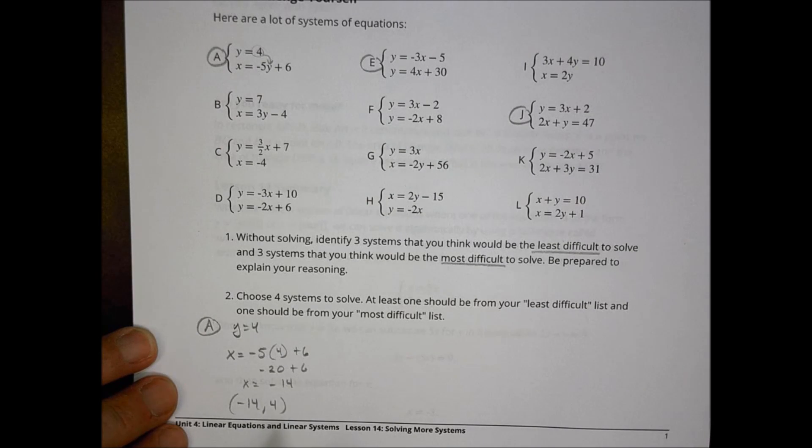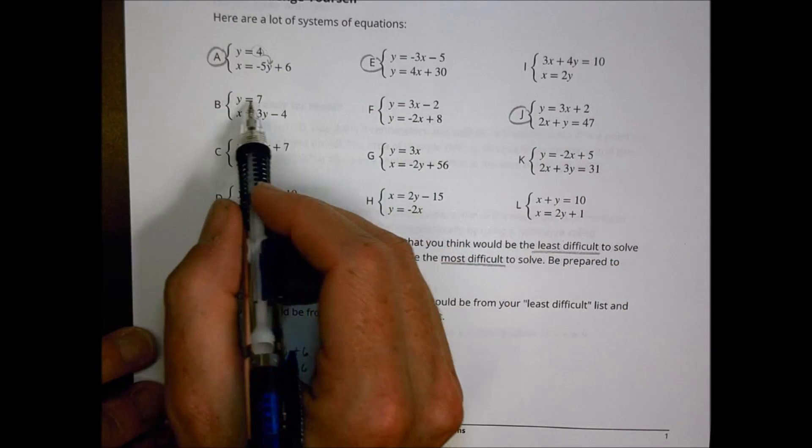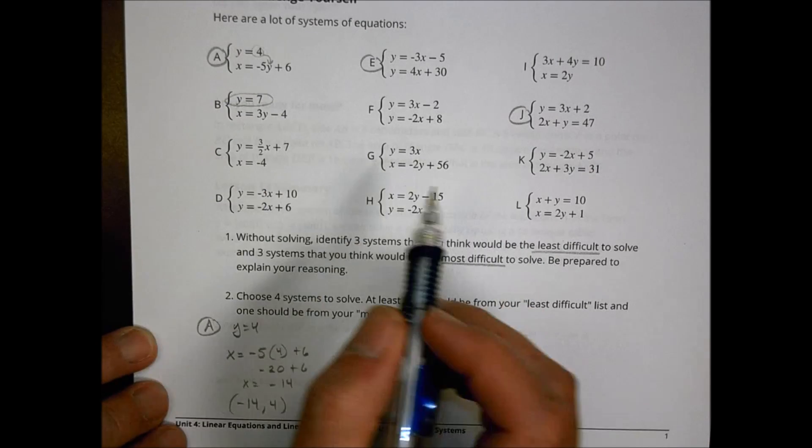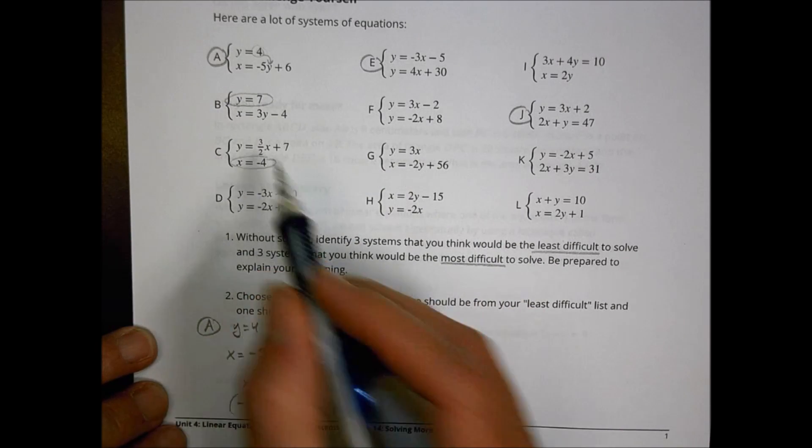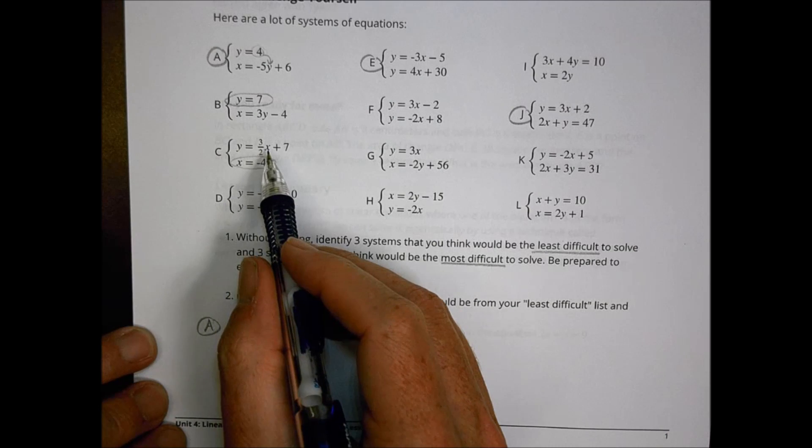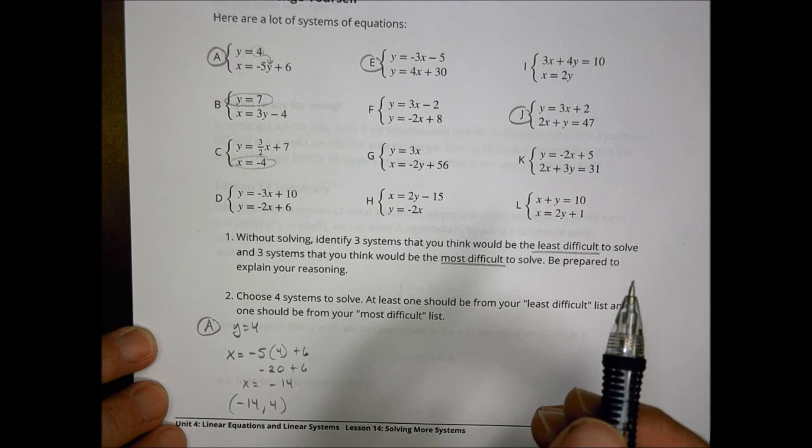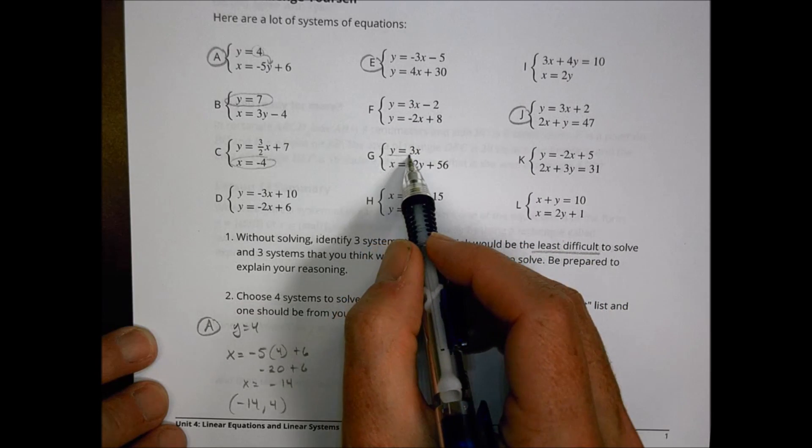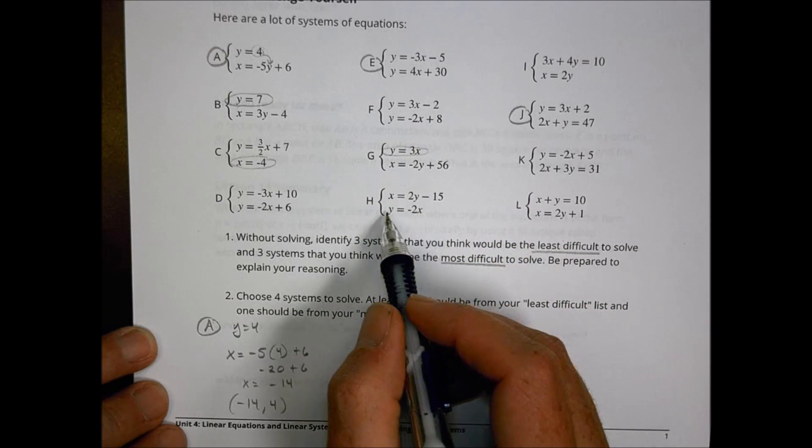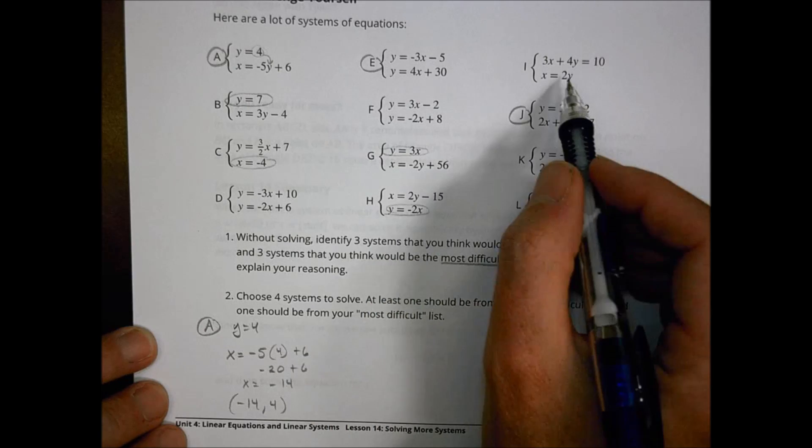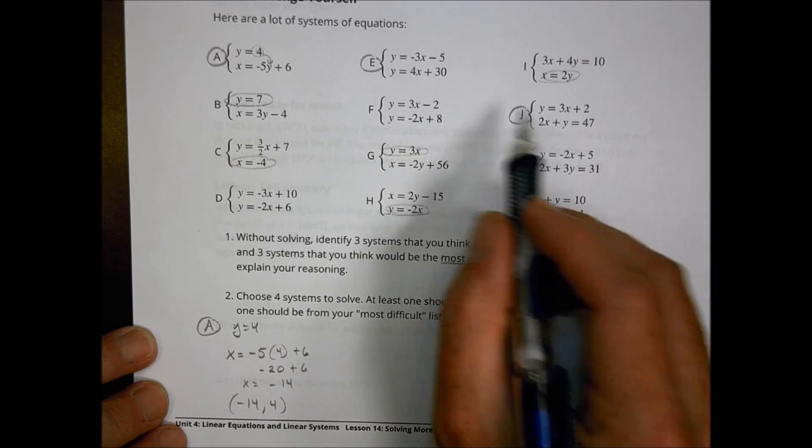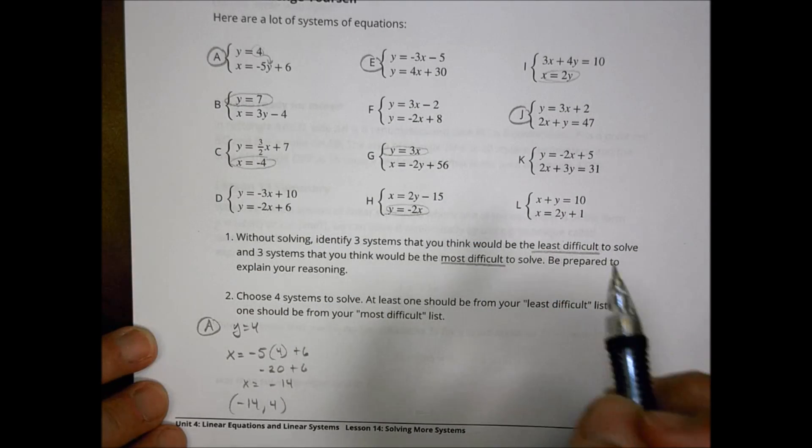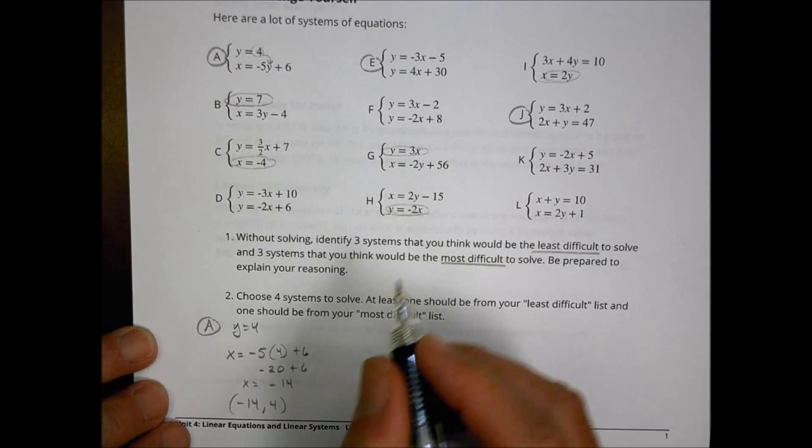I chose that as one of my easy ones because they already gave me a value of y. I would say B is similar, X is a little similar, and I have a fraction there. Those are all pretty similar ones there because they're pretty straightforward. Those are the easy ones I would probably choose from.